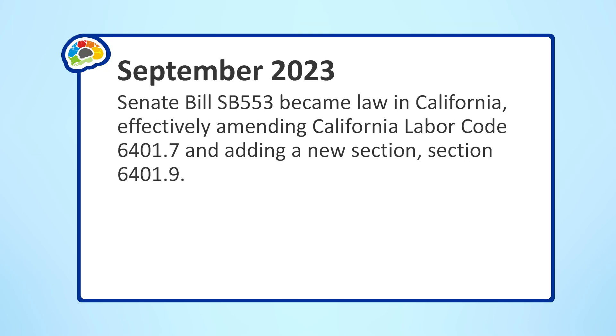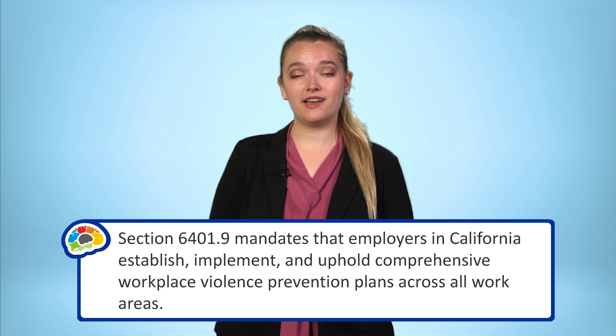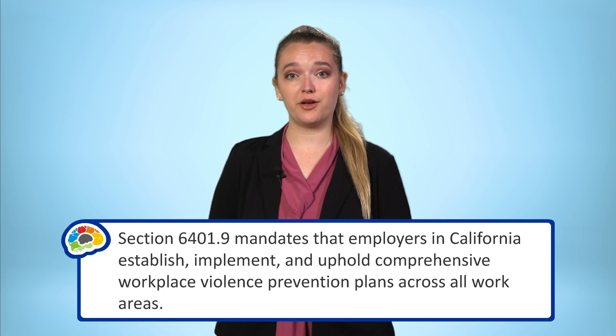In September of 2023, Senate Bill SB 553 became law in California, effectively amending California Labor Code 6401.7 and adding a new section, section 6401.9. In this course, we will break down the key components of this addition and discuss what it means for employers and employees in California. In simple terms, section 6401.9 is a crucial addition to the Labor Code.